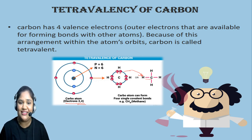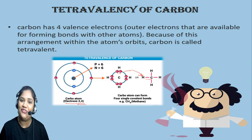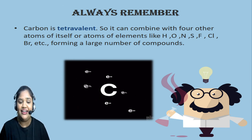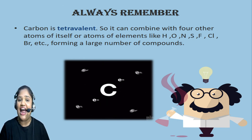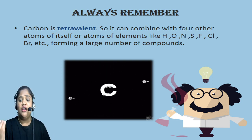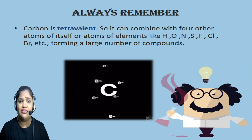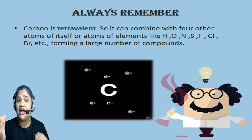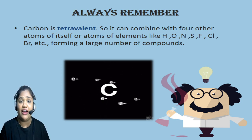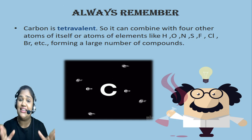This is tetravalency of carbon — a simple and important property of carbon. Always remember: carbon is tetravalent, so it can combine with 4 other atoms of itself or atoms of other elements like hydrogen, oxygen, and nitrogen. With this property, together with catenation, carbon can form a large number of compounds in nature.